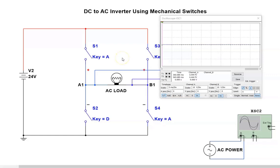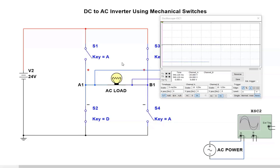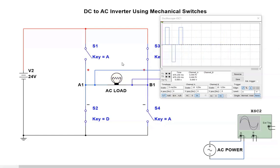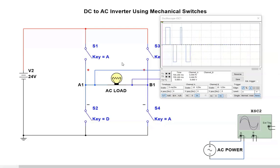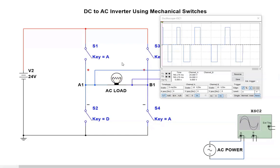I'll close key A, which is switch S1 and S4, and you can see that we get a positive alternation. I'll release that and push key D, which is S2 and S3 — now we're negative. I'm going to try to make an inverter with my switches. It's very difficult to time it perfectly, and the simulation I'm using does not happen in real time. So you can see I have a bit of an uneven inverter. I definitely have AC — one's positive, one's negative, one's positive, one's negative.